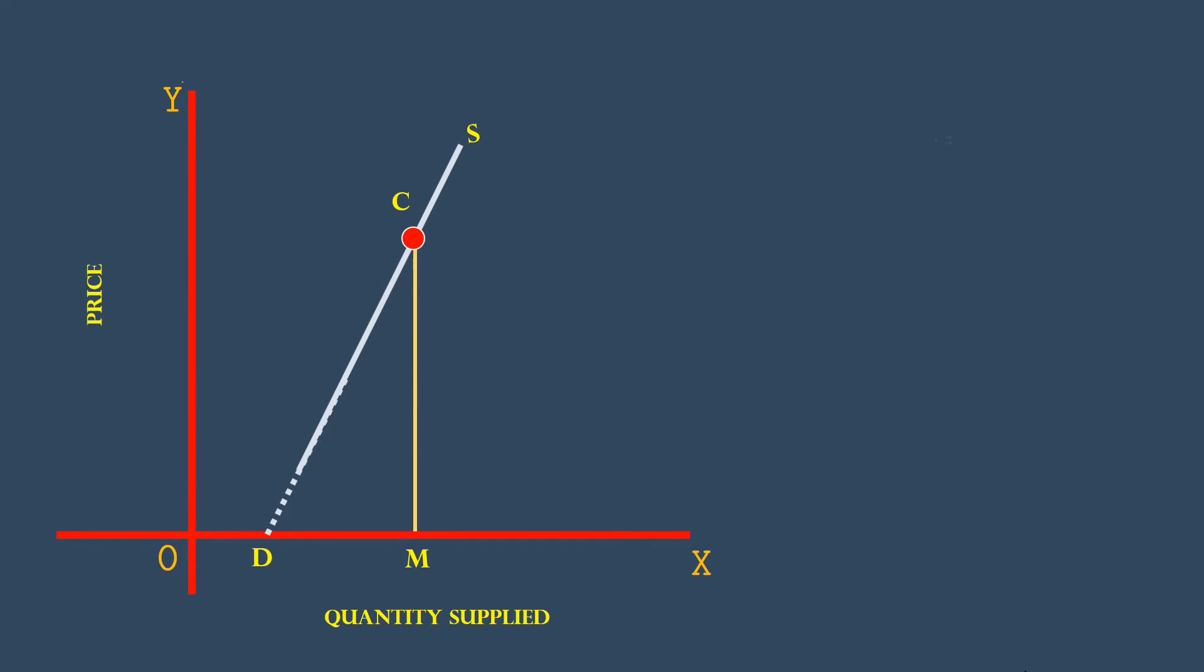The formula to calculate elasticity is DM over OM. Substitute the length of DM and OM. The resultant value gives the supply elasticity.